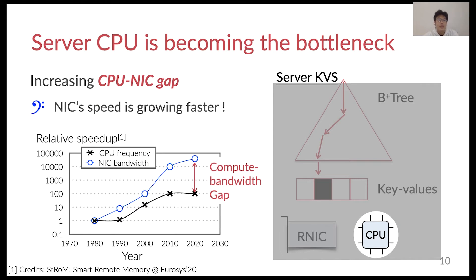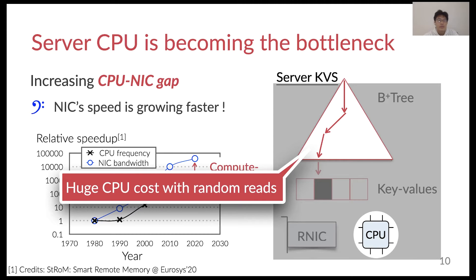However, due to the diminution of Moore's law, there is an increasing performance gap between the network and the CPU. Further, the tree traversal will introduce huge CPU costs due to the poor locality of its access pattern. As a result, the server CPU would become the performance bottleneck of the key-value store.